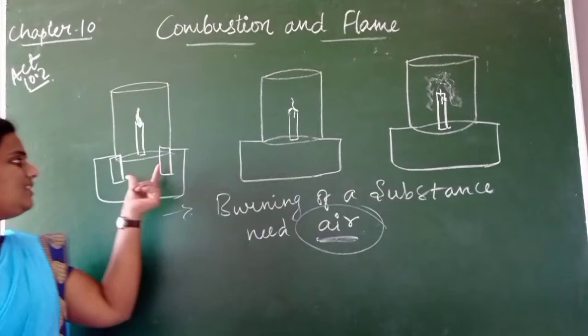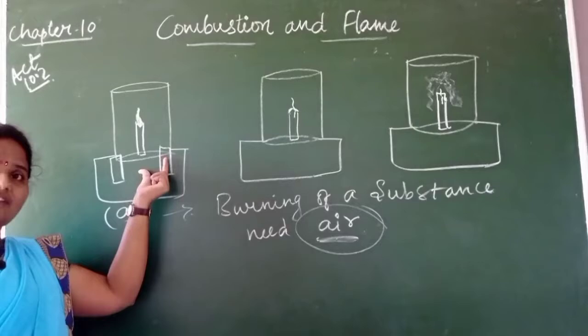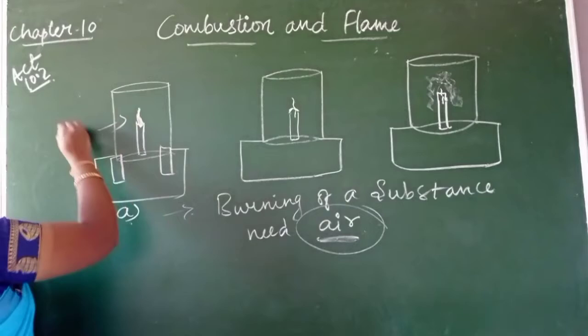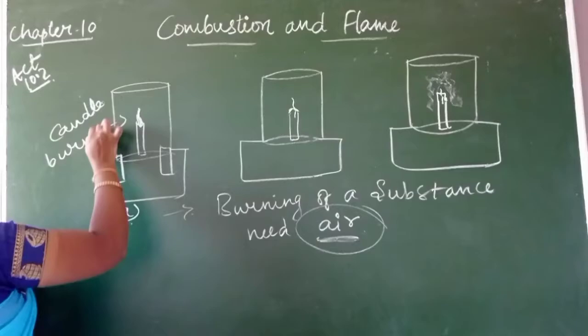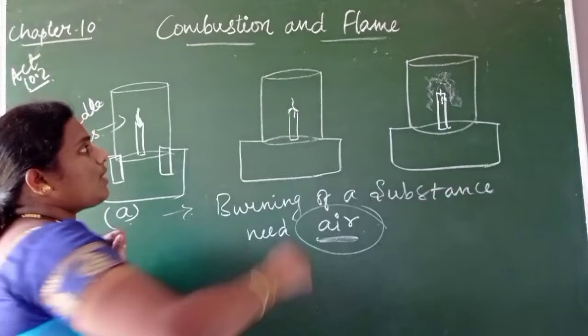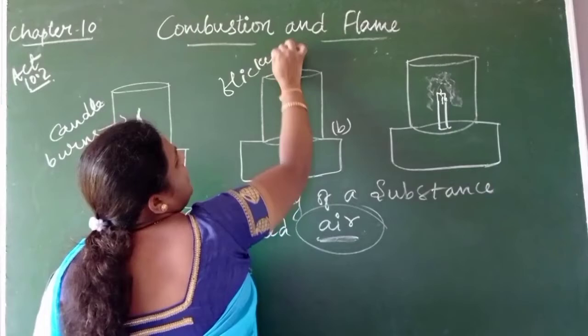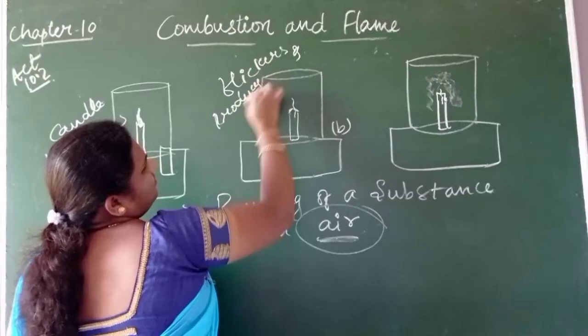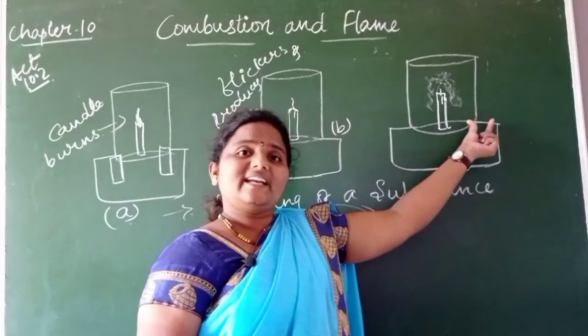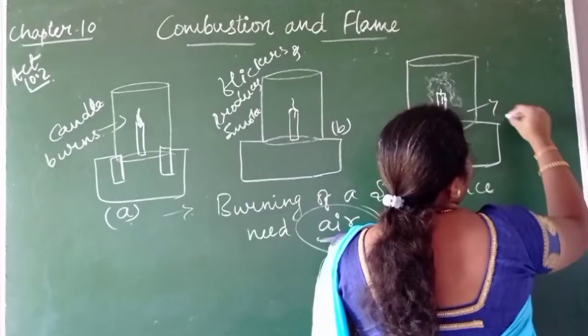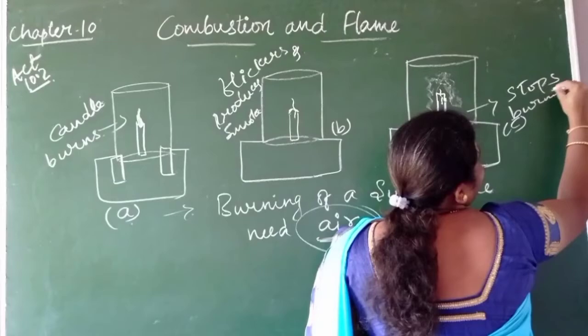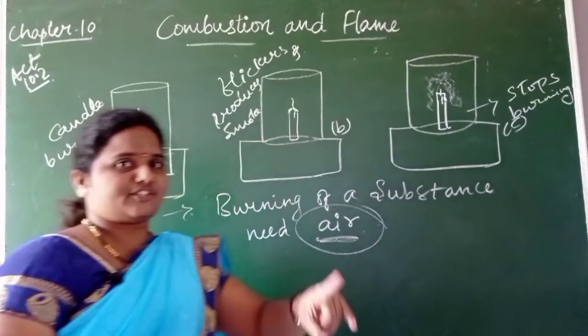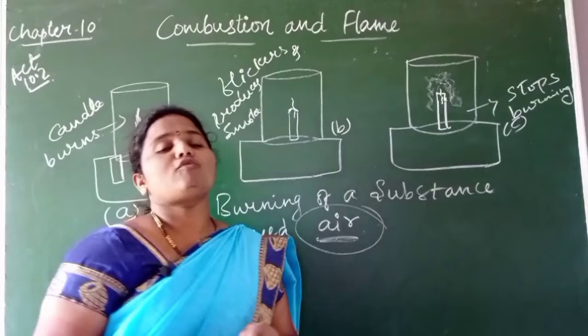To summarize: in the first case, we supplied air using wooden blocks, so the candle burned smoothly. In the second case (case B), we reduced the amount of air, so the candle flickered and produced smoke. When the air was completely absent, the candle stopped burning — combustion does not take place in the absence of air. So air is essential for combustion.